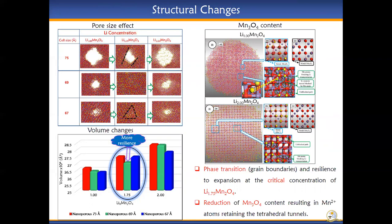Note that the structures undergo a phase transition at the critical concentration of Li 1.75 from cubic to tetragonal spinel phase. Volume analysis on the structures shows resilience to expansion for nanoporous 69 at the critical concentration of Li 1.75.